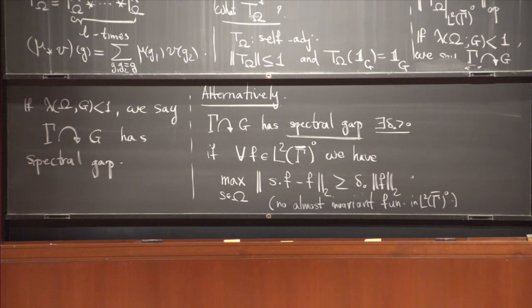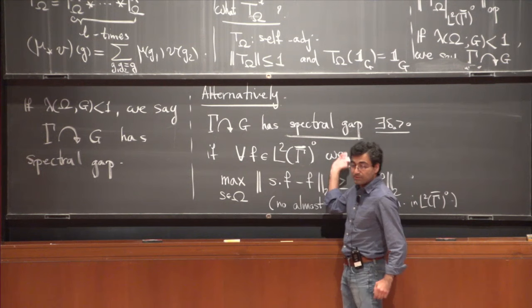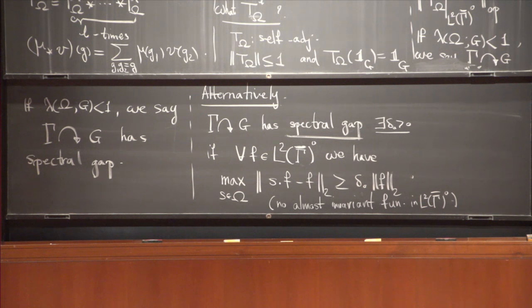When we have such a spectral gap property, we have the best understanding of the random walk, and therefore we know how well we can approximate points inside G within gamma. But now the question is: do we have such groups?